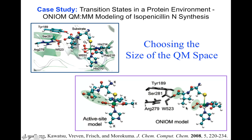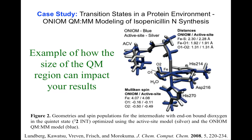Within the ONIOM framework, they can optimize the geometry, and what they've done here is overlay the two structures on top of each other. In silver is the smaller active site model, and in blue is the larger onion model. You can see within the active site area they get pretty good agreement from the geometries. Where you see the biggest difference is on one end — and remember, that's where our models differed. The active site model didn't have the additional groups there in the QM space; they were considered in the MM space. But in the onion model, by adding those additional residues to the QM region, they've seen a change in the geometry observed within the QM space.